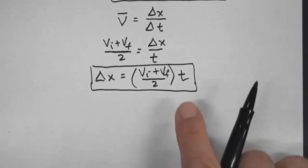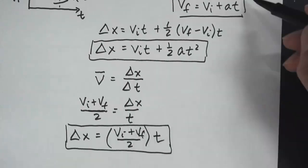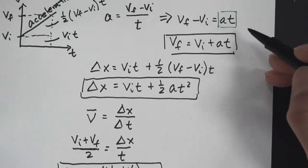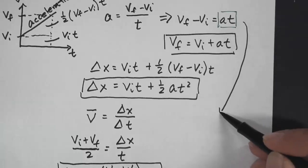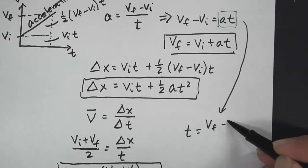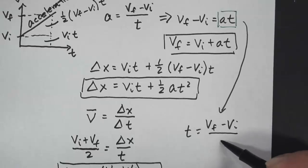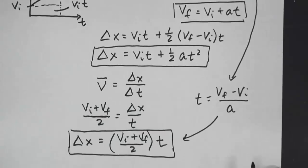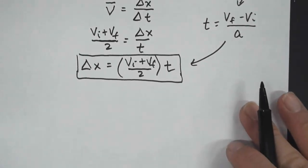Next, I'm going to substitute for t. And I'm going to use this equation right here, I'm going to solve this in terms of t. And I get vf minus vi divided by the acceleration. And I'm going to take that and substitute that in for the time.